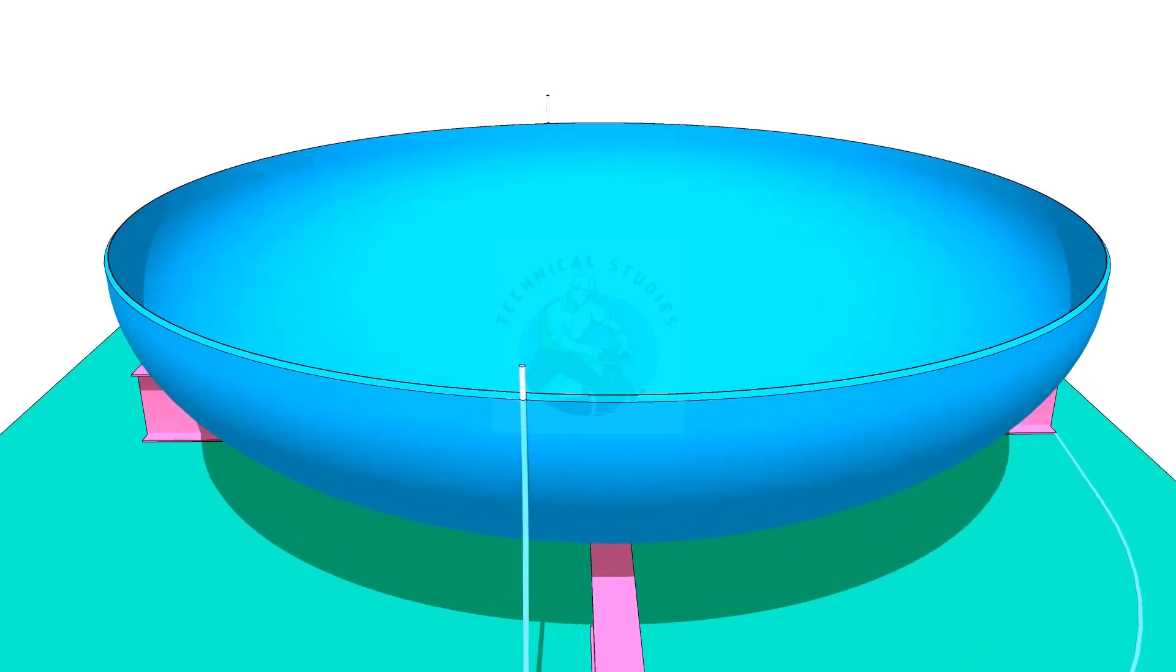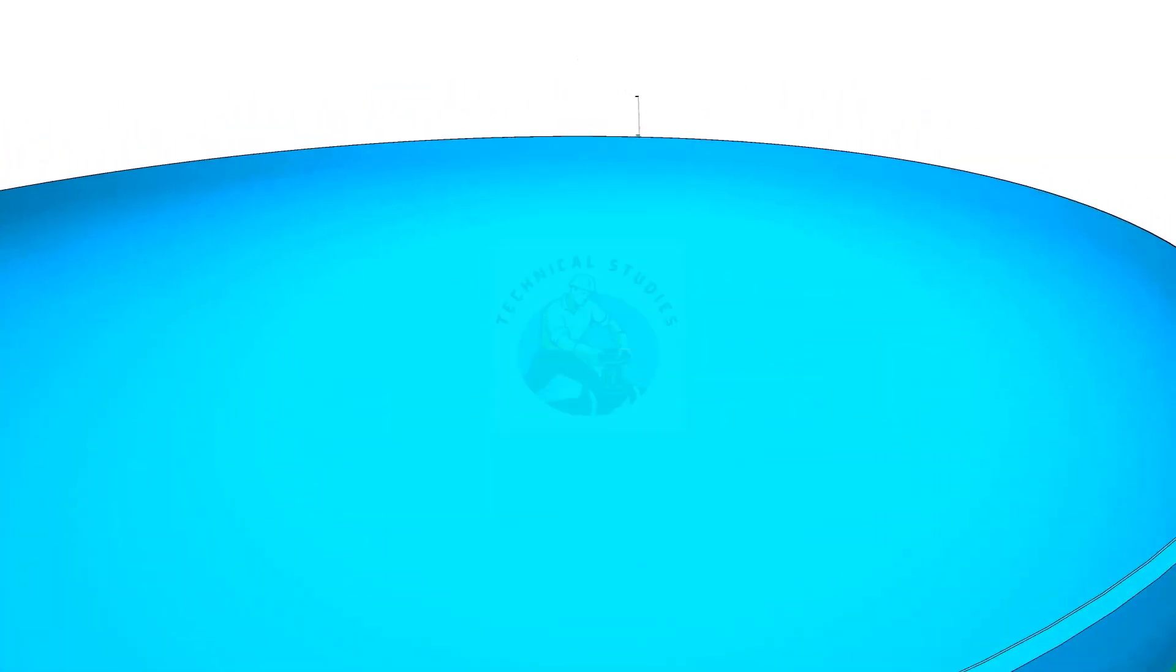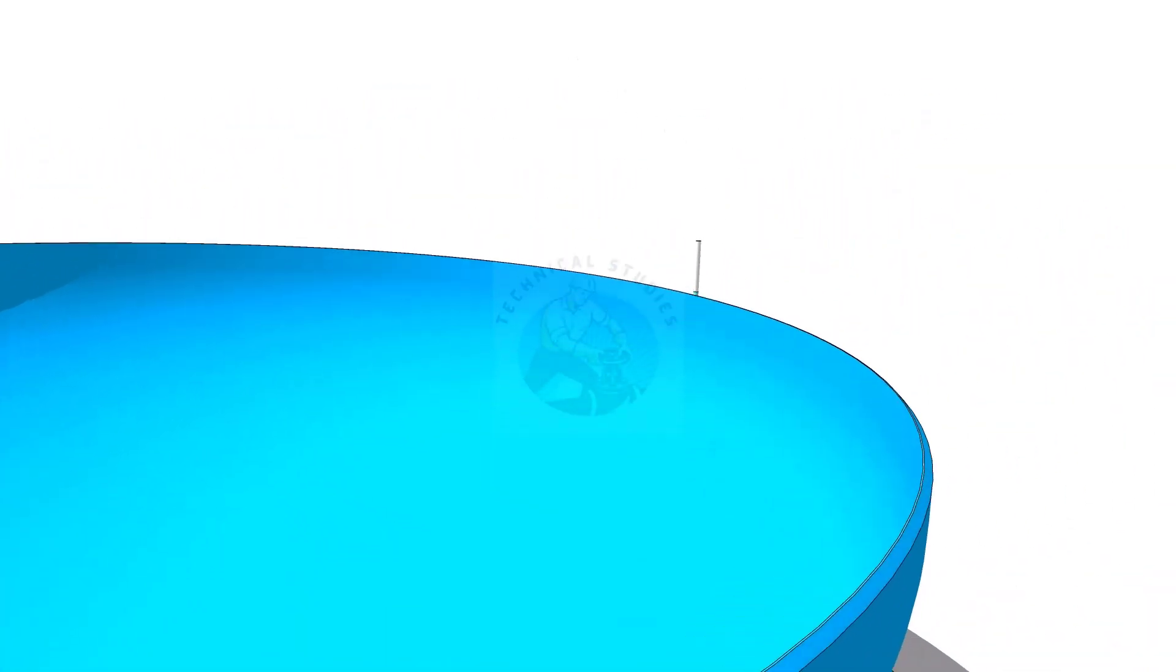Let us start preparing the dish end first. Level the dish end at four points, roughly 90 degrees apart.